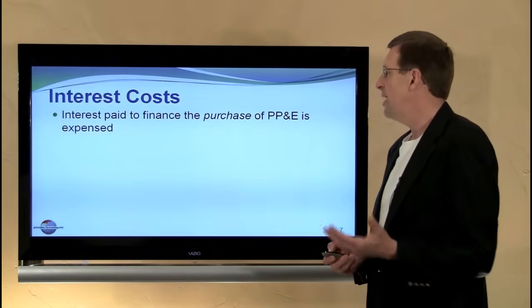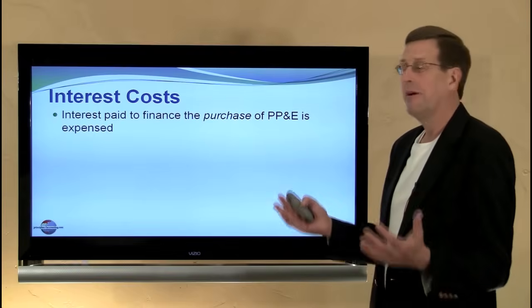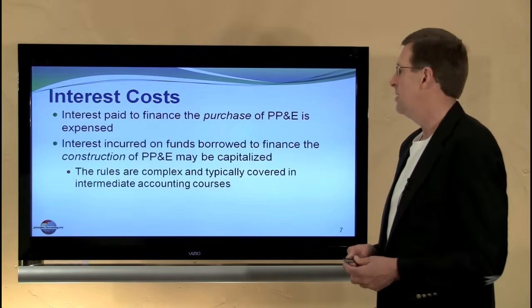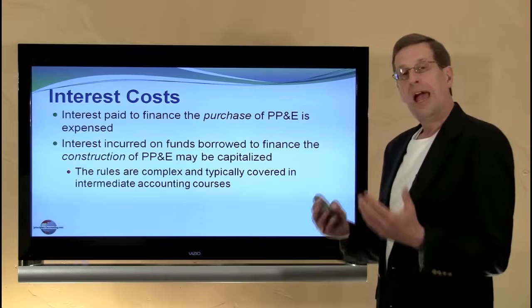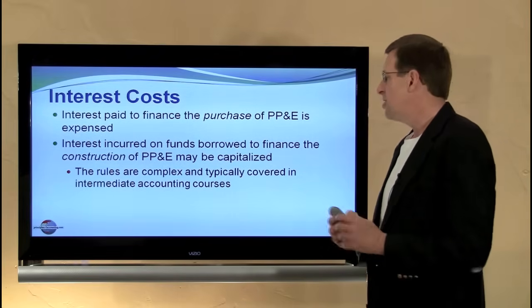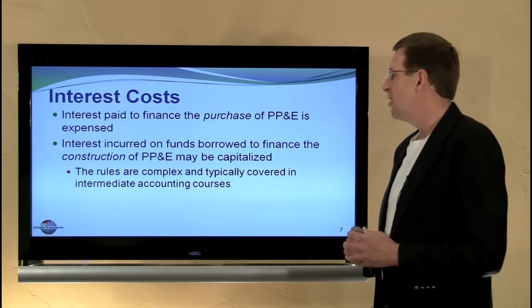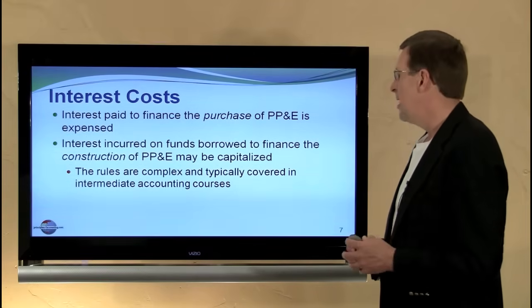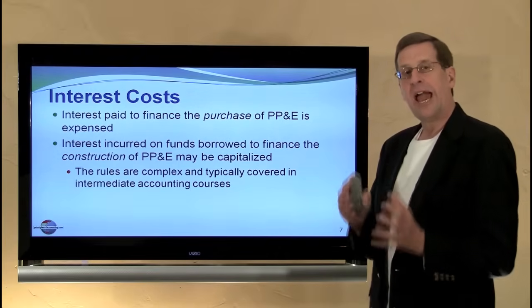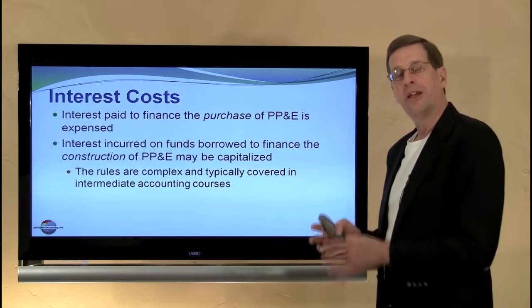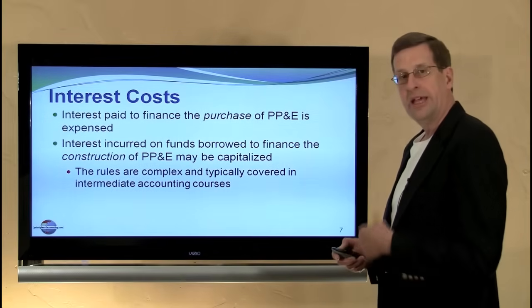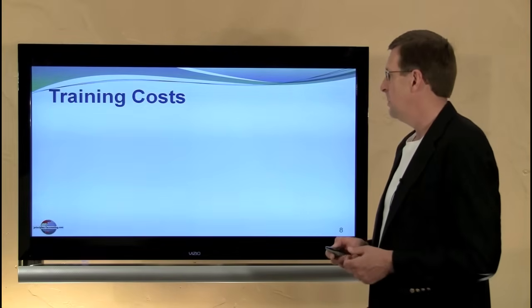Moving on to interest costs: interest paid to finance the purchase price of property, plant, and equipment is to be expensed — it is not a capital expenditure. However, interest incurred on funds borrowed to finance the construction of property, plant, and equipment may be capitalized. These rules are fairly complex and typically covered in intermediate accounting courses. In general, it's actual interest costs incurred during the active construction period — nothing more than that would be capitalized; the rest would be expensed.